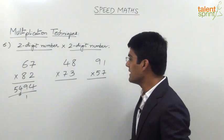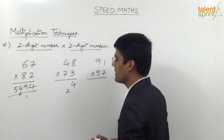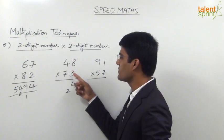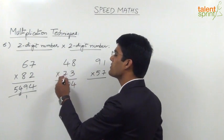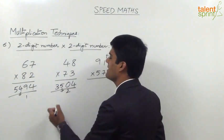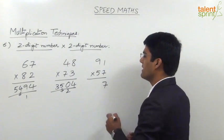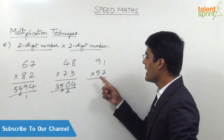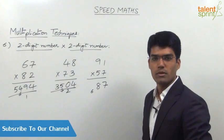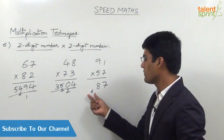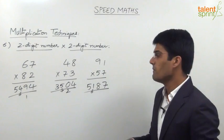Moving on: 48 into 73. First step: 8 into 3 is 24, so 4 in the answer and 2 carried forward. Second step, cross multiplication: 4 into 3 is 12, 7 into 8 is 56. 56 plus 12 is 68. 68 plus 2 is 70. So 0 in the answer and 7 carried forward. Last step: 4 into 7 is 28. 28 plus 7 is 35. Final answer is 3504. Last question: 91 into 57. First step: 1 into 7 is 7. Cross multiplication: 9 into 7 is 63, 5 into 1 is 5. 63 plus 5 is 68. No carry, so 8 in the answer and 6 carried forward. Last step: 9 into 5 is 45. 45 plus 6 is 51. Answer is 5187. This is how quickly we can multiply two-digit numbers with this three-step technique.